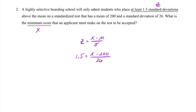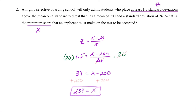Jumping back to our algebra, we need to isolate x by multiplying both sides of the equation by 26. That gives us 39 equal to x minus 200. Then we add 200 to both sides to isolate and solve for x, where we get x equal to 239. So the minimum score that an applicant must make on the test would be 239.